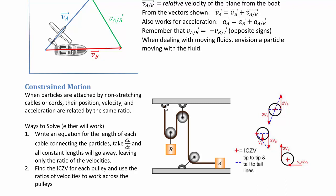Fundamentally, the length of each cable doesn't change. When drawing coordinate systems, it's easiest to draw horizontal reference lines as a datum and measure things away from fixed points — including fixed pulleys. So y-sub-a would go in one direction and y-sub-b would go downward, always away from fixed points.